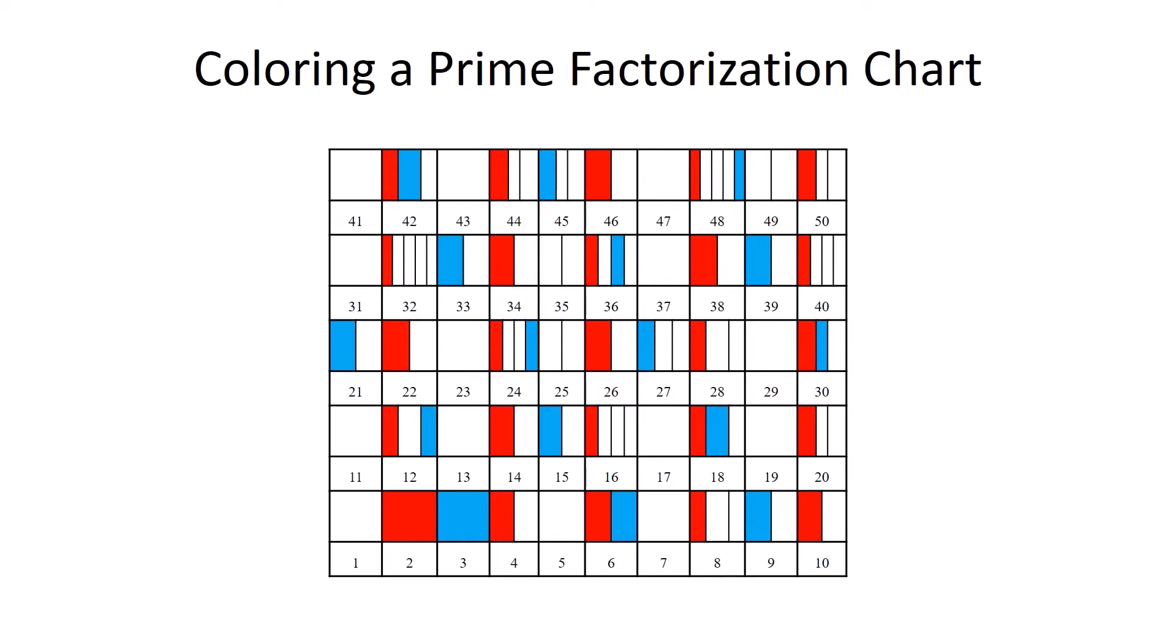Then 12, 15, 18, 21, 24, 27, 30, 33, 36, 39, 42, 45, and 48. And they all get one blue section.